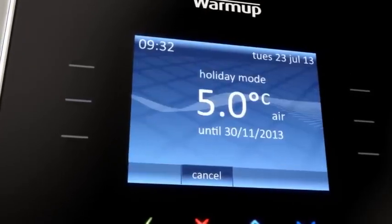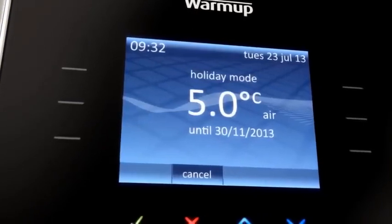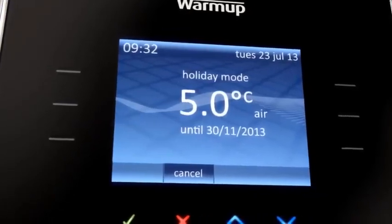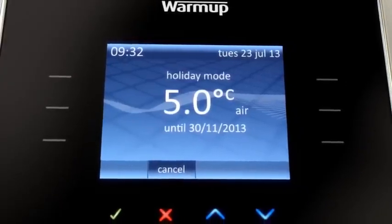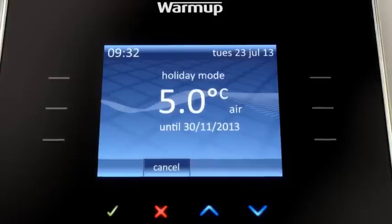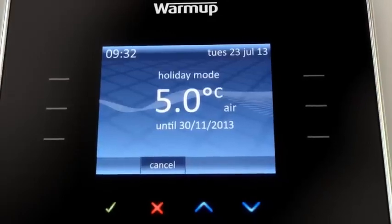The 3iE is calendar-based and can be set for specific dates in advance. That means you can also use the set and forget holiday heating programs. No need to worry about setting or heating while rushing for the airport.